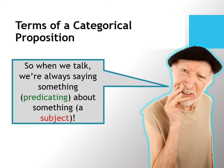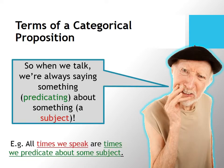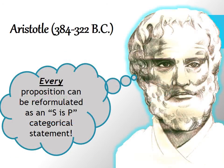When we talk, it looks as though we're always saying something about something — that is, we're always predicating about some subject. Even this sentence can be translated as: 'All times that we speak are times when we predicate about some subject.' Aristotle thought that every proposition could be reformulated as some type of S is P categorical statement. He may not be right about that, and there are some exceptions, but it's amazing how many everyday propositions can be reformulated into this subject-predicate form.